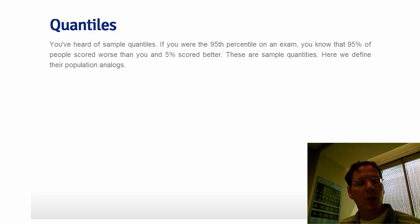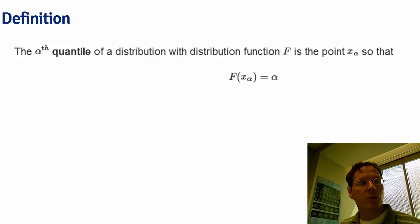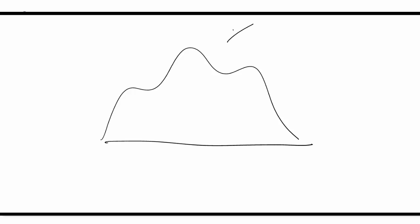These are sample quantiles. We're going to define their population analogues. The alpha-th quantile of a distribution with CDF F is the point x_alpha such that F(x_alpha) = alpha. For a density f(x), the distribution function evaluated at x is the area below x — the probability that a random variable from this population is less than or equal to x.